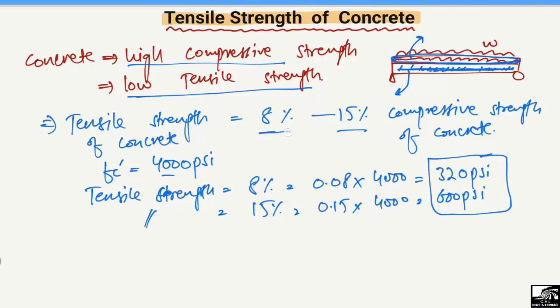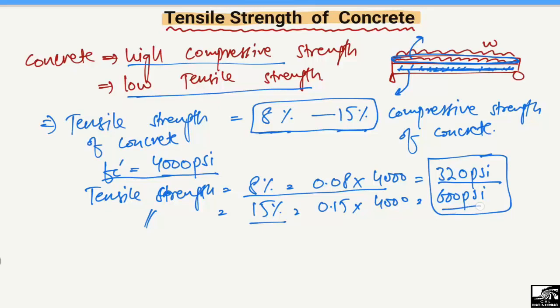So the range of the tensile strength of concrete is from 8% to 15%. With a compressive strength of 4000 psi, it ranges from 320 psi up to 600 psi. In most cases, however, we ignore this tensile strength of concrete because we want to place reinforcement there in order to take the tensile stresses.